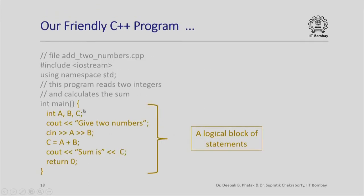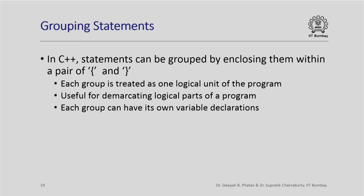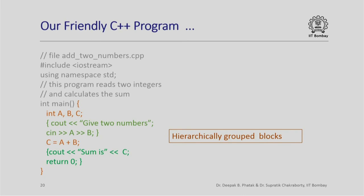The statements highlighted in brown are grouped together between two braces, forming what we call a logical block of statements. In C++, logical blocks can be grouped using a pair of braces, useful for demarcating different logical parts of a program, with each group having its own variable declarations. These groups can also be hierarchically arranged — for example, between the orange braces is one group of statements, and within that the green braces denote another hierarchically arranged group. So there is one top-level group with two lower-level groups nested inside.